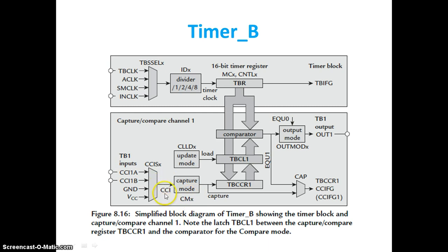Earlier, the CCI bit was connected through a latch, and due to that connection we had a sampling mode — an option to read the input signal value. That option is not available in the Timer B capture channel. This means Timer B does not support sampling mode.